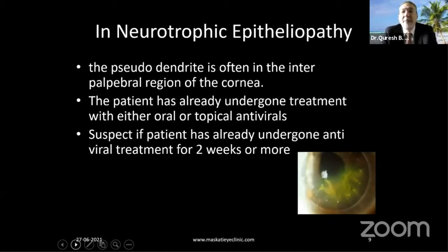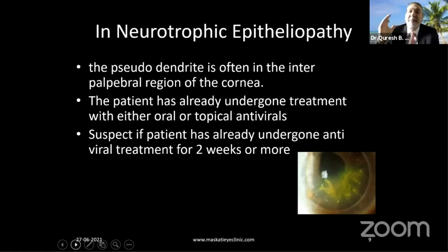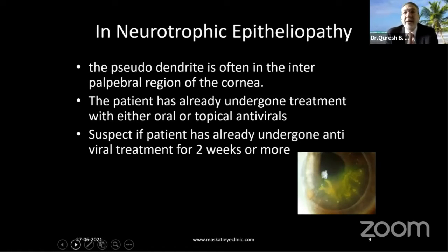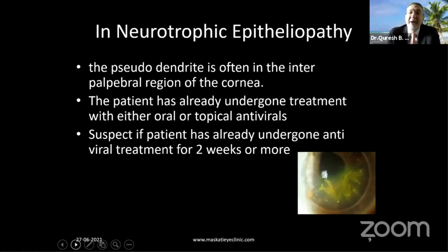In neurotrophic epithelopathy, the condition typically follows HSV keratitis that has healed but the epithelium has not healed, and we keep treating with antivirals and worsen the problem. The pseudodendrite in neurotrophic epithelopathy is often in the interpalpebral area — unlike herpes zoster — because it results from a healing or non-healing ulcer from a prior HSV infection, occupying the same location as HSV would. The patient typically gives a history of having been treated with oral, topical, or both antivirals. Suspect this if a patient has undergone antiviral treatment for two weeks or more and this is the picture you are seeing.